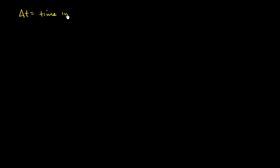So let's say that the ball is in the air for delta t. Delta t is equal to time in the air. Then we know that the time up is going to be half that, which is the same thing as the time down. The time up is going to be equal to the time in the air divided by 2.